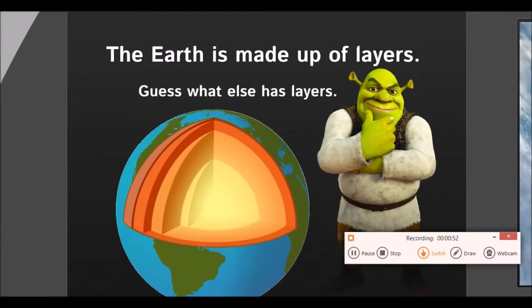The Earth is made up of layers. The most dense layers are in the center of the Earth because things that are more compacted and more dense actually have a stronger gravitational pull. As the Earth was molten and started forming, the most dense layers formed in the core while our less dense layers are on the outside.